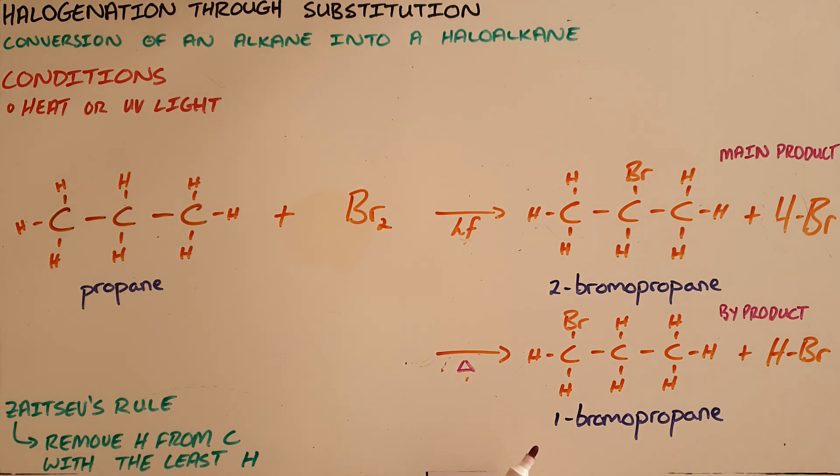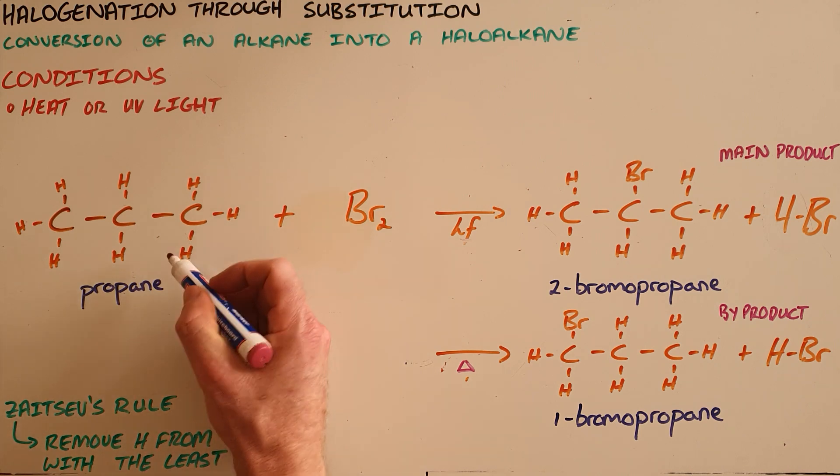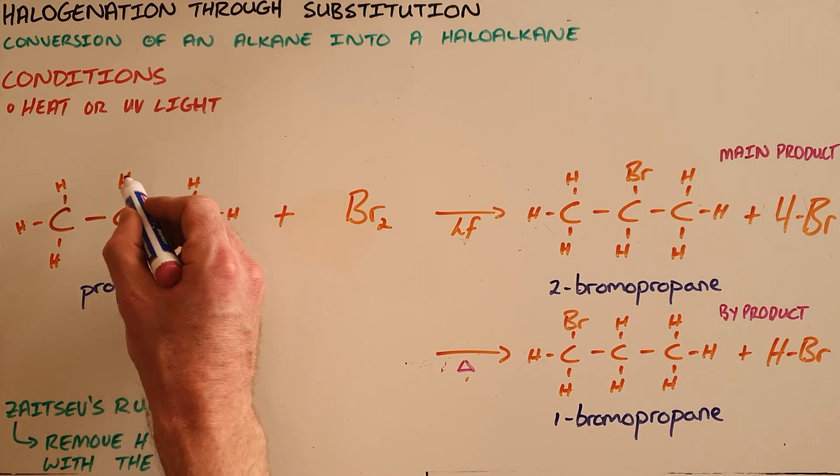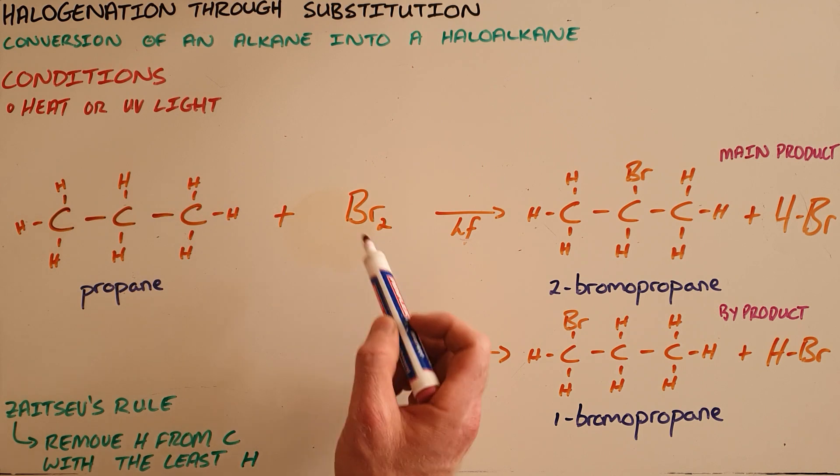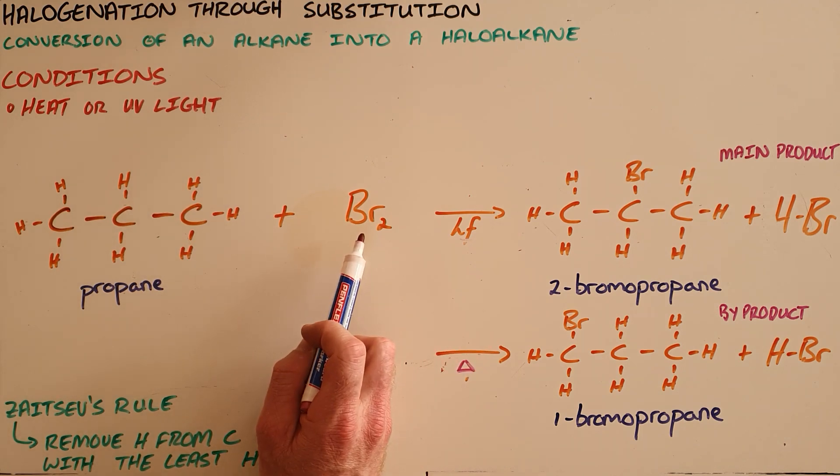We have the halogenation of propane, where the propane is going to exchange one of its hydrogen atoms for one of the bromine atoms here.